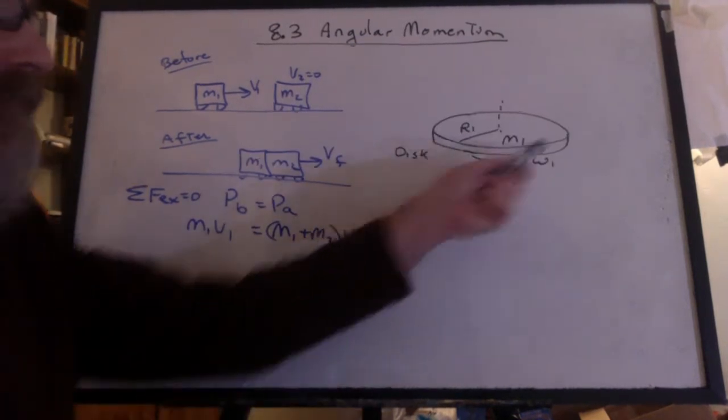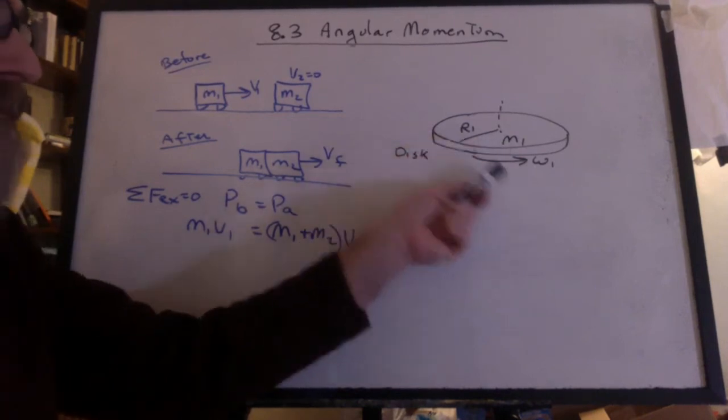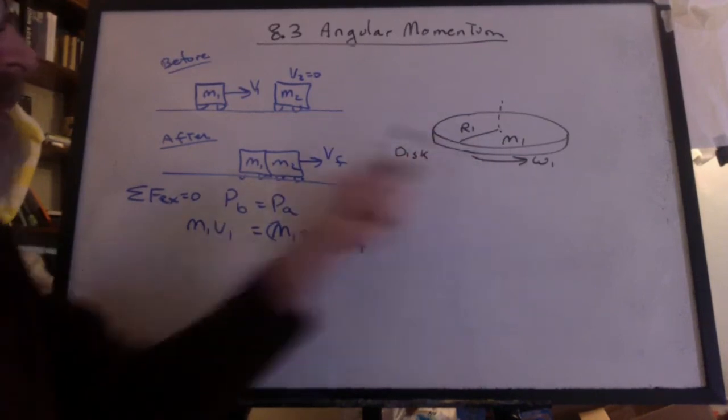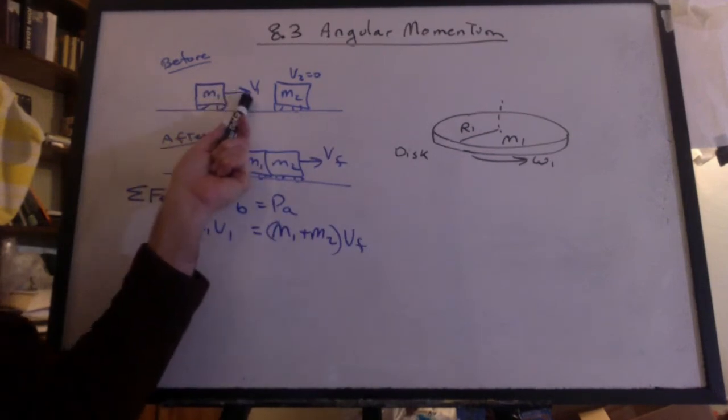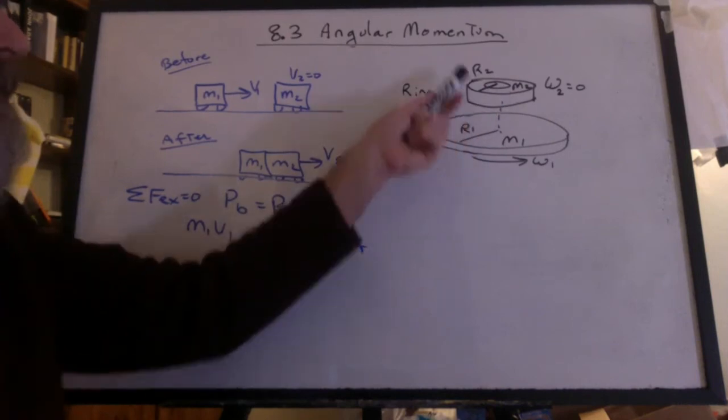We're going to have a disk rotating. It's going to have a mass 1, a radius 1, and an omega 1. Just like this cart had a mass 1 and a velocity 1. The second object is going to be a ring. Radius 2.